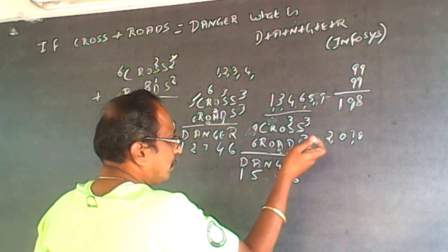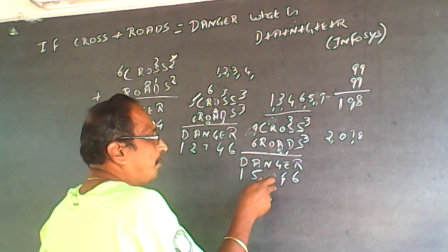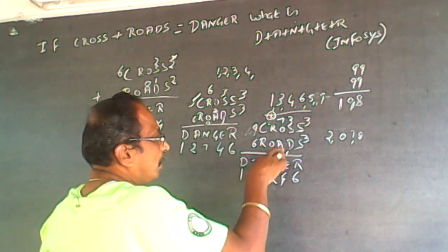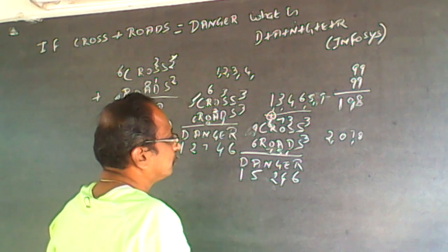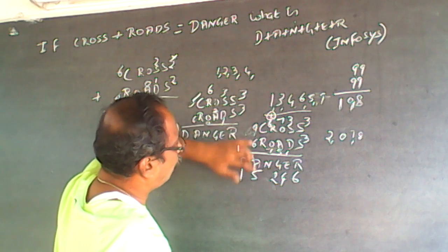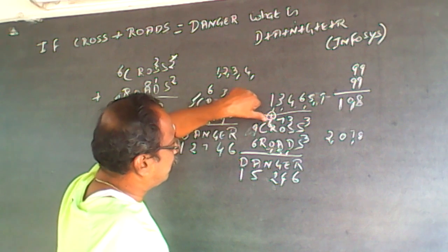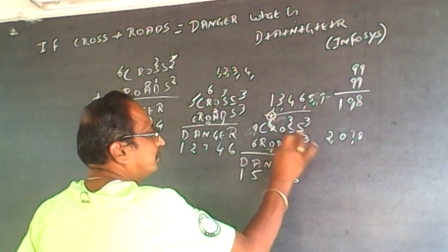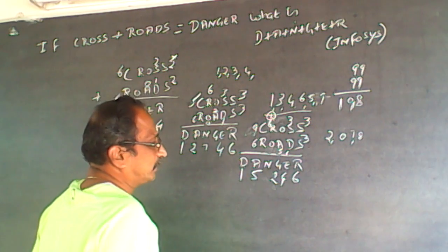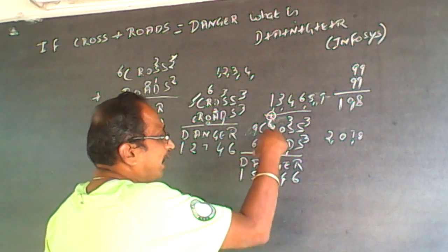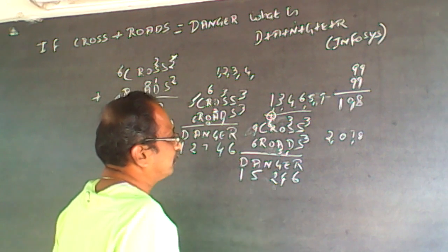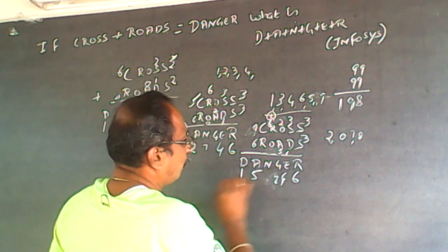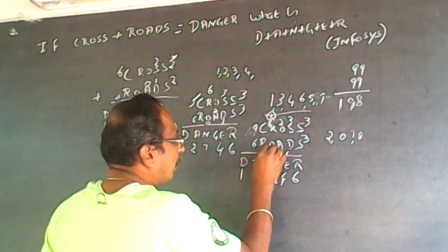Now I need to find O and N. I can use the two and seven combination. Putting seven for O: six plus seven is thirteen, carry one — N becomes two. Then one plus six plus one is carry again. Seven plus five is twelve, carry one. One plus six plus seven — seven plus seven equals fourteen, four is already used. So I cannot use seven for O. Instead, O equals two: six plus two is eight, so N becomes eight.